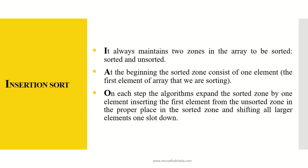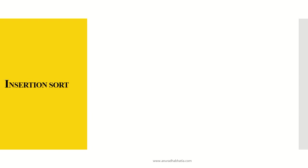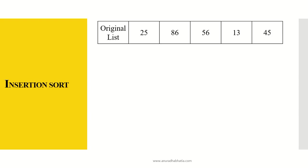Now let's see how insertion sort works. If we have an original list — 25, 86, 56, 13, and 45 — we need to arrange them from smallest to largest. Let's see how insertion sort works: we first start comparing the first element with the rest of the elements in the array.